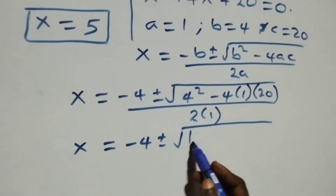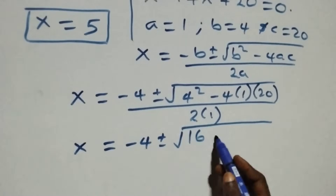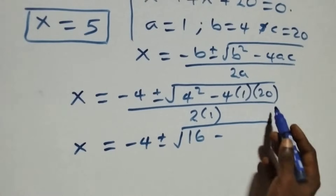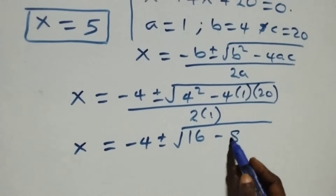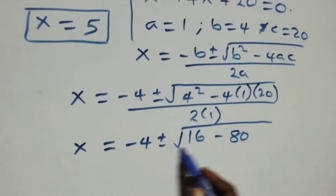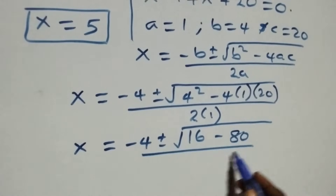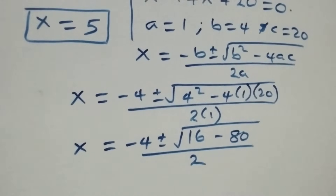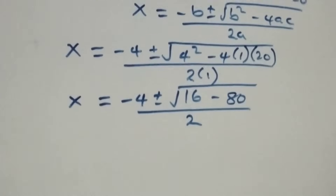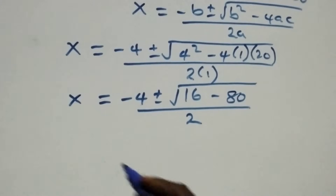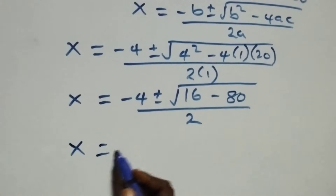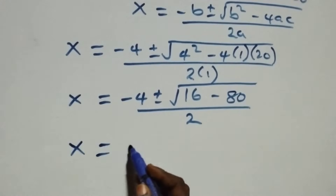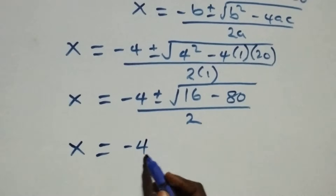4 squared gives us 16, then minus 4 times 1 times 20 gives us 80, all over 2. So we have x equals to minus 4 plus or minus square root of 16 minus 80, all over 2.